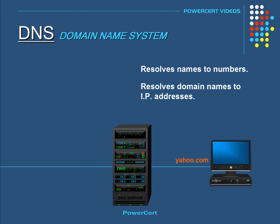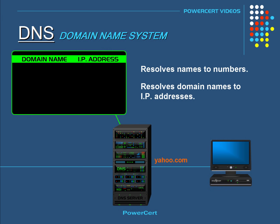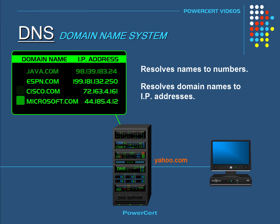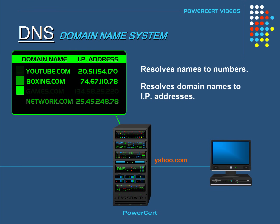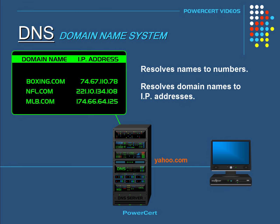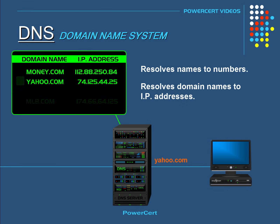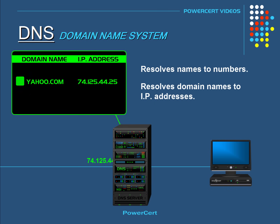So back to our example, when you type in yahoo.com in your web browser, the DNS server will search through its database to find a matching IP address for that domain name. And when it finds it, it will resolve that domain name to the IP address of the Yahoo website. And once that is done, your computer is able to communicate with the Yahoo web server and retrieve the web page.